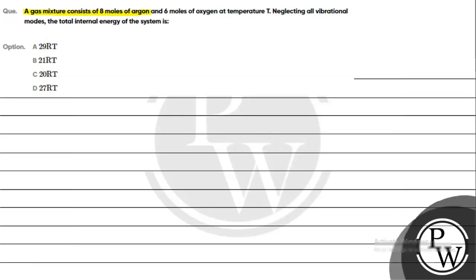The question says a gas mixture consists of 8 moles of argon and 6 moles of oxygen at temperature T. Neglecting all vibrational modes, the total internal energy of the system is: option A 29RT, option B 21RT, option C 20RT, option D 27RT.